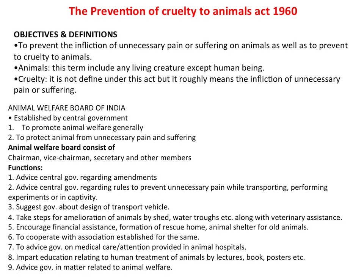The objective of the Prevention of Cruelty Act 1960 is to prevent the implication of unnecessary pain or suffering on animals and to prevent cruelty to animals. The Animal Welfare Board of India was established by the Government of India to promote animal welfare generally and to protect animals from unnecessary pain and suffering. The Animal Welfare Board consists of a chairman, vice chairman, secretary, and other members. Its functions include advising the central government regarding amendments, advising regarding rules to prevent unnecessary pain while transporting, performing experiments or keeping animals in captivity, and suggesting decisions about transport vehicles.